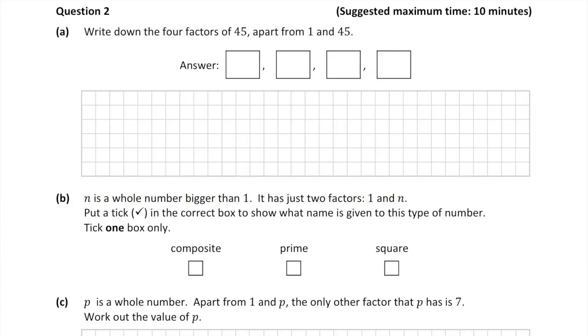Here's today's question which is worth 15 marks. In part a, we have to write down the 4 factors of 45 apart from 1 and 45.